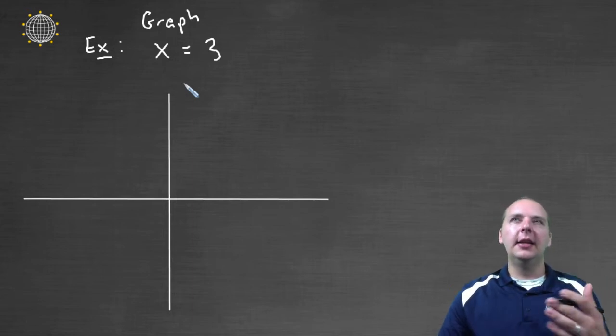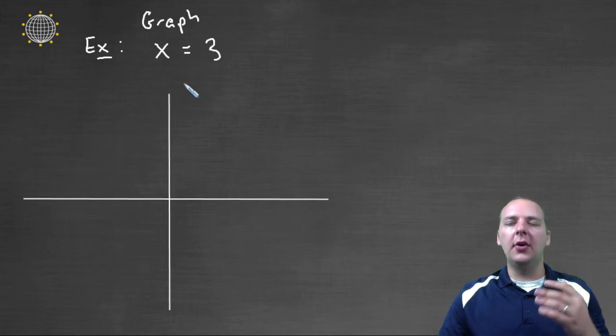and hopefully we just remembered that this is a vertical line, being that it's x equals a constant. But let's say we forgot. Then the way you could logically think this out is, okay, x is three.